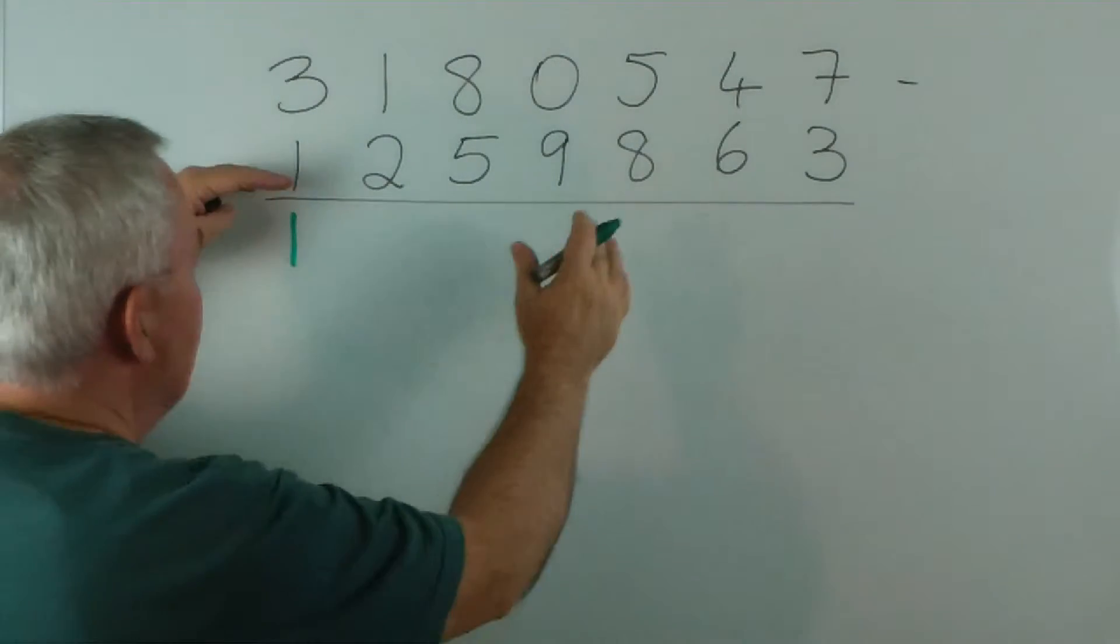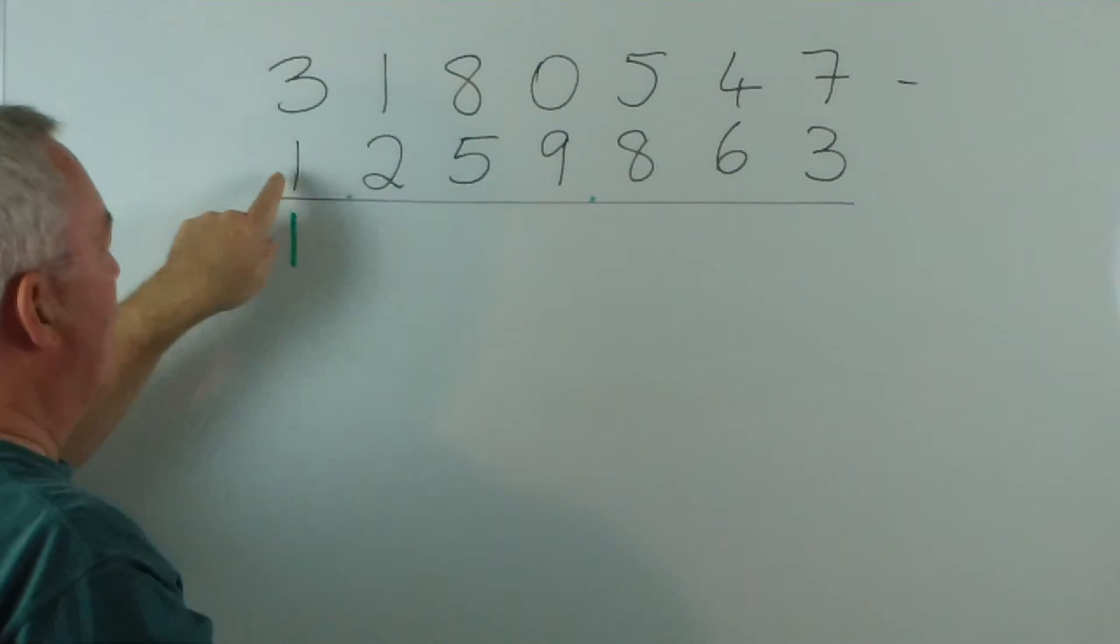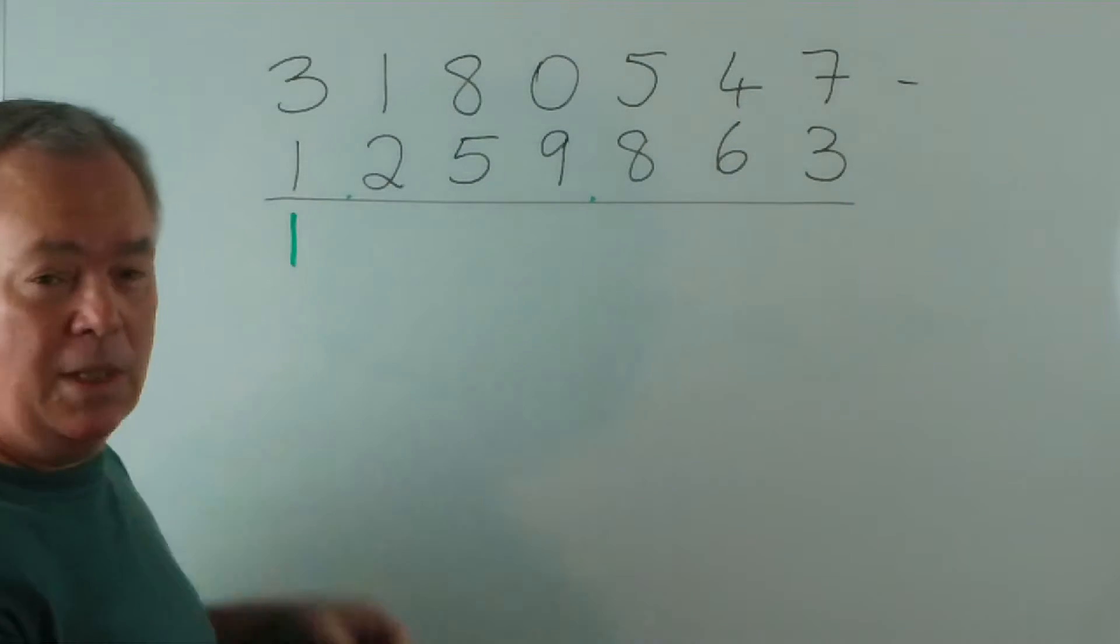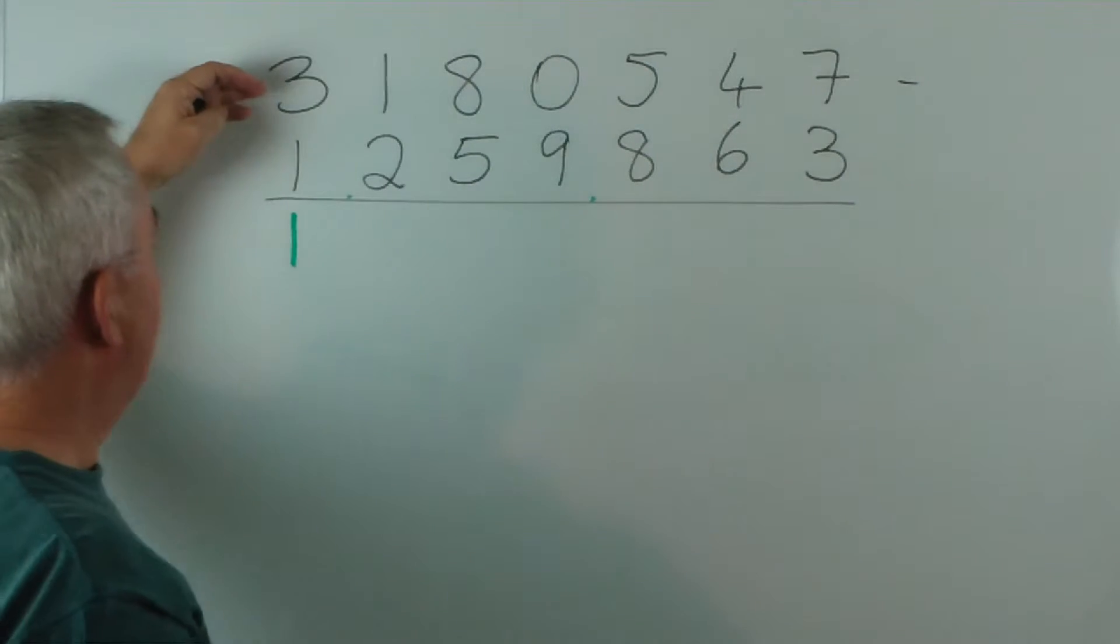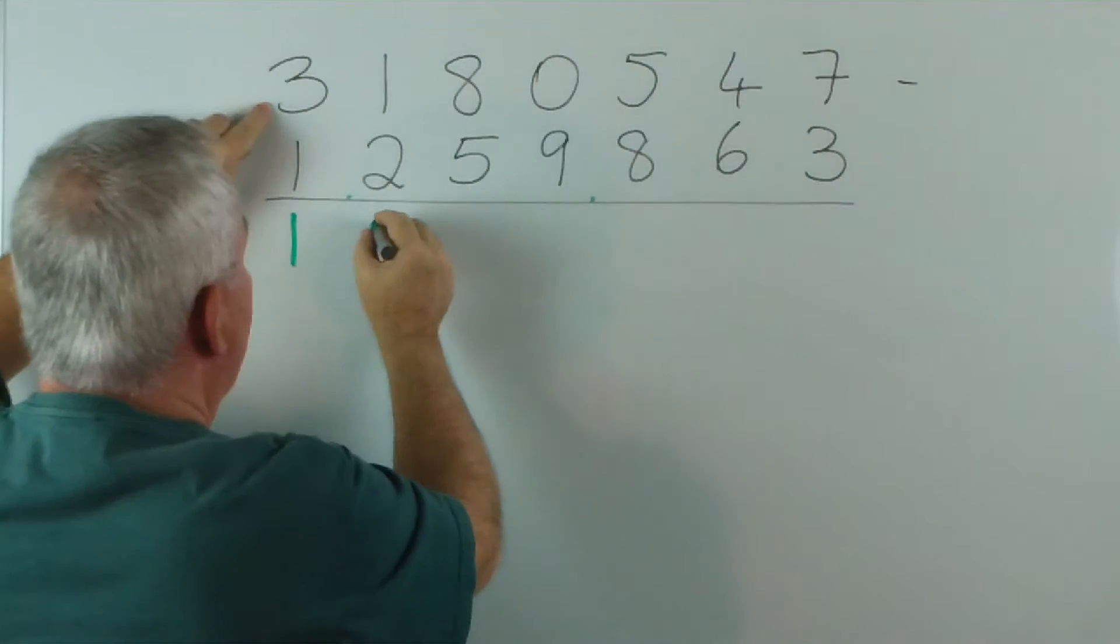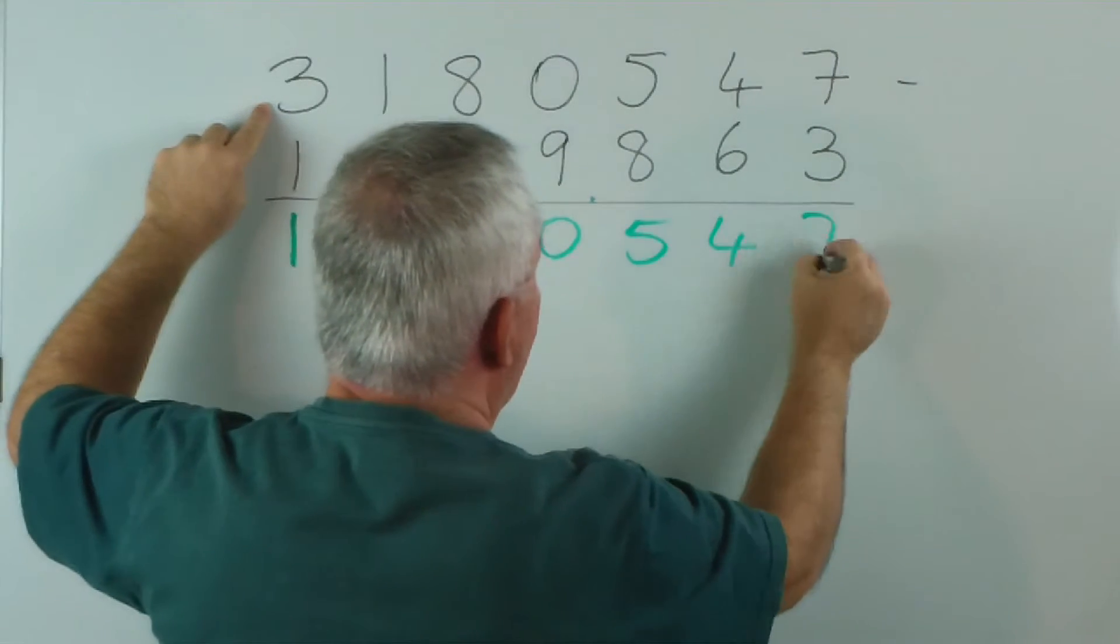In essence, we're increasing this number, or we're comparing it... 1,259,863 to two million. So, we subtract two million from this number. So, two million from this number is 1,180,547.